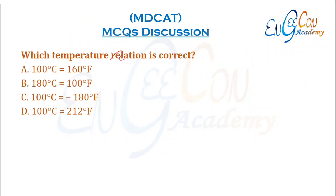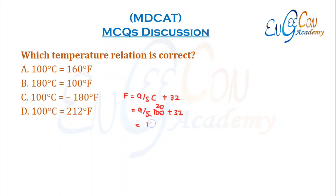Which temperature relation is correct? Fahrenheit = (9/5) × Centigrade + 32. If we take 100°C: (9/5) × 100 + 32 = 180 + 32 = 212 Fahrenheit.